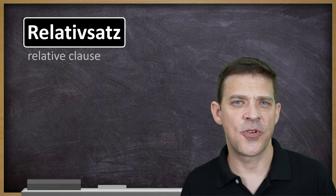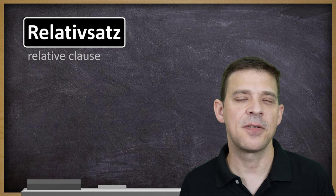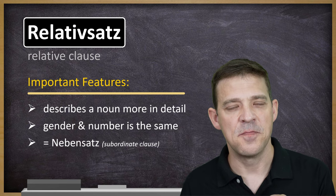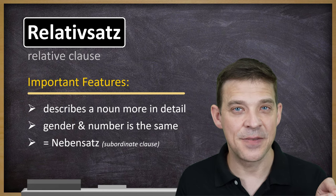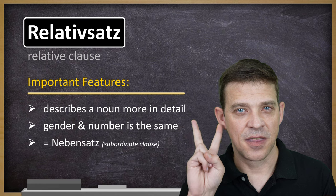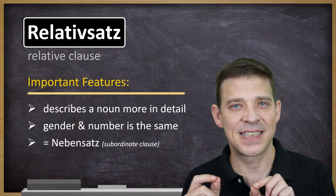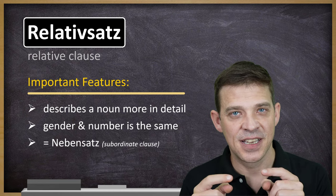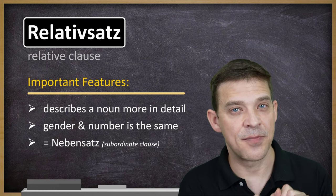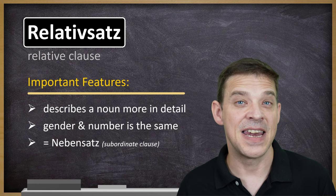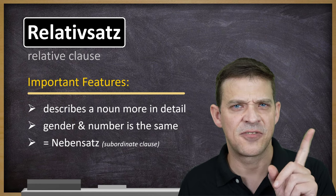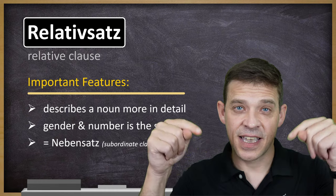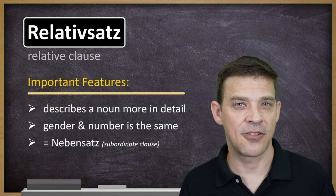Relativsatz in English is a relative clause, and the relative clause has some specific important features. Number one, it describes a noun more in detail — the relative clause describes the noun mentioned in the main clause more in detail. Number two, gender and number is the same, meaning the gender and the number of the relative pronoun has to match the gender and the number of the noun you describe. Number three, it is a Nebensatz, a subordinate clause. If this doesn't sound so familiar, we have videos about relative clauses in detail about nominative, accusative, and dative — you will find the link down in the description.